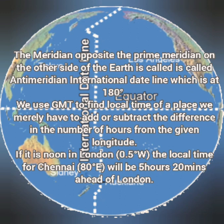We use Greenwich Mean Time, that is the prime meridian time, to find the local time of any particular place on the globe. When we travel towards the east, we add hours, and when we travel towards the west, we deduct hours. For example, if it is noon or 12 o'clock in London — 0.5 degrees west of the prime meridian — to calculate the local time of Chennai, which is 80 degrees east, we find the difference between the two longitudes and multiply by 4 minutes. Converting the total minutes into hours, Chennai is 5 hours and 20 minutes ahead of GMT because it lies eastward.